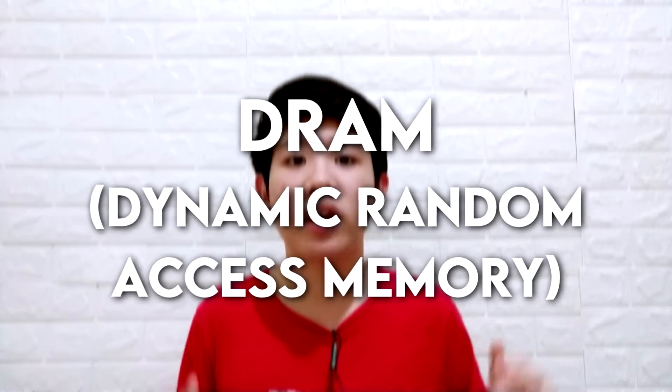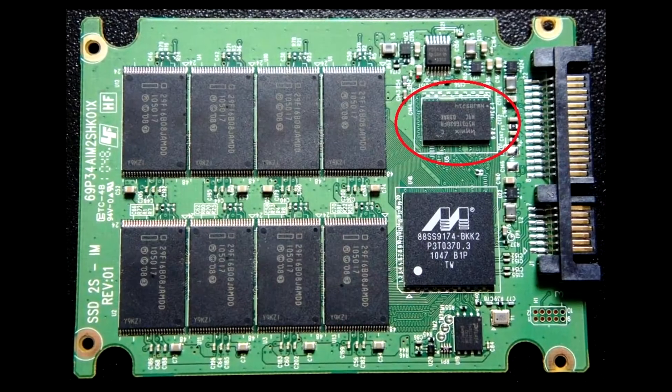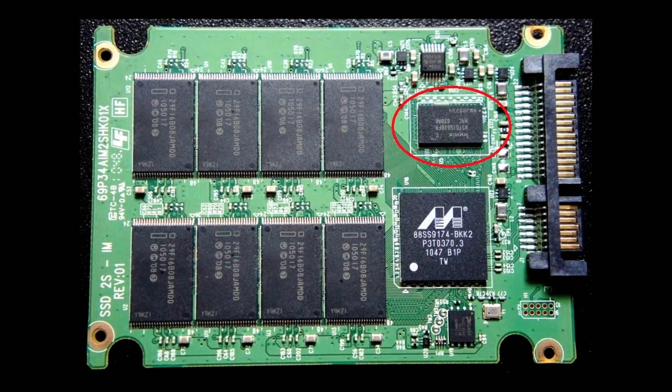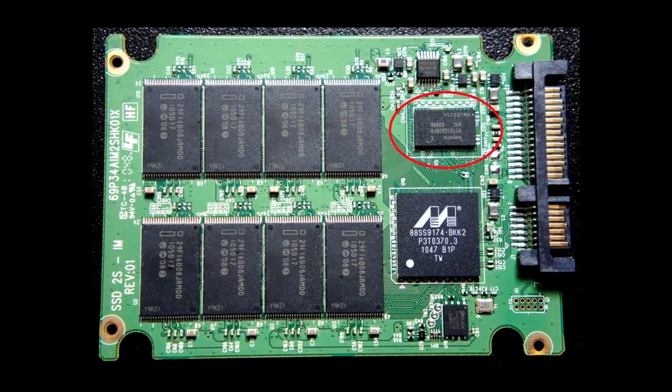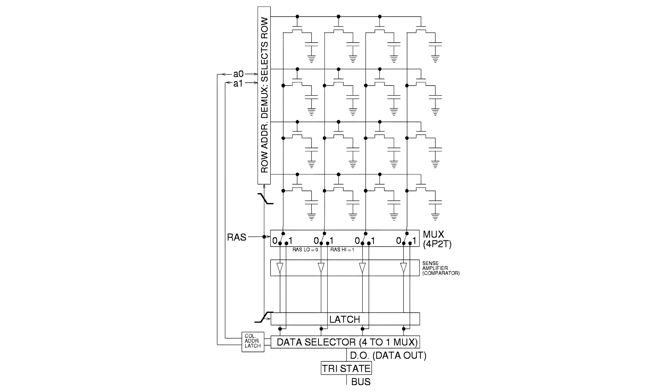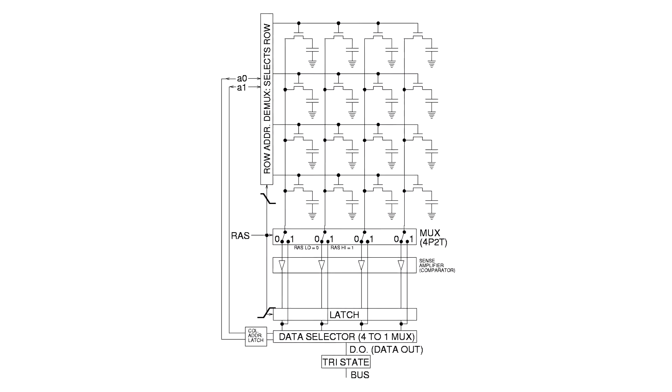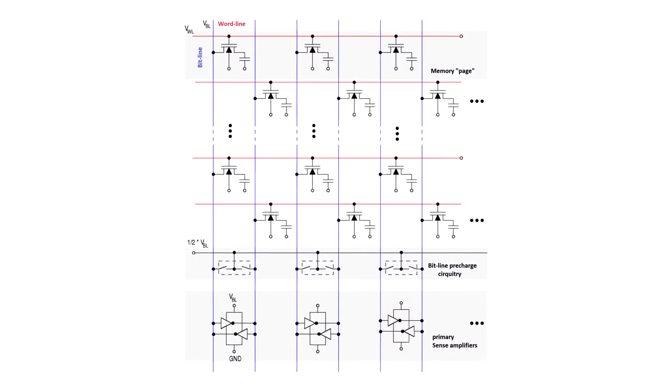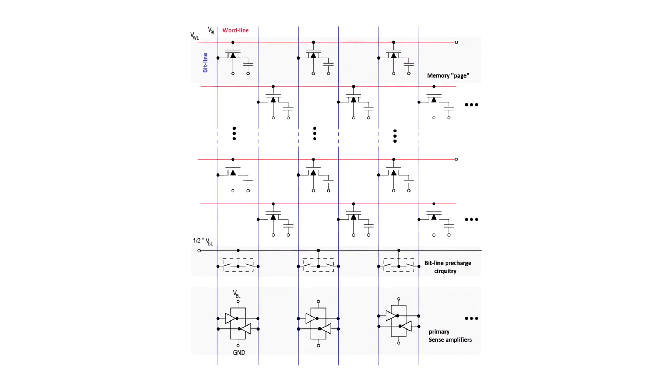First off, you must know what is a DRAM Cache. DRAM, or dynamic random access memory, is a type of random access semiconductor memory that stores each bit of data in a memory cell, just like your RAM or regular NAND flash. DRAM typically takes the form of an integrated circuit chip, which can consist of dozens to billions of DRAM memory cells. Unlike flash memory, DRAM is a volatile memory, meaning it loses data quickly when power is removed.